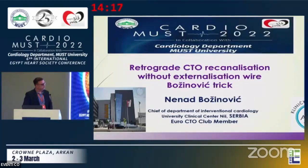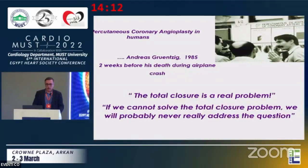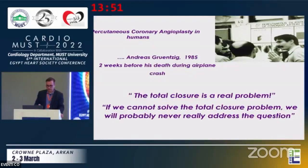Percutaneous coronary angioplasty in humans was performed by Andreas Grüntzig in 1985. Two weeks before he died in an airplane crash, he said: 'The total closure is a real problem. If we cannot solve the total closure problem, we will probably never really address the question.'